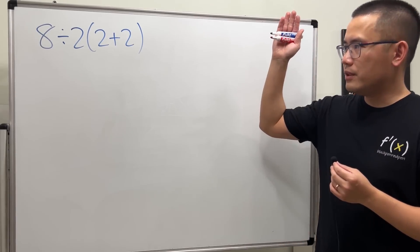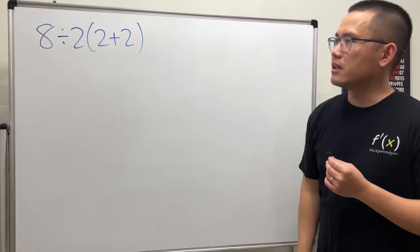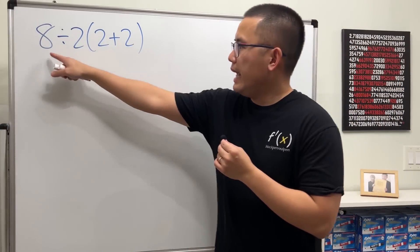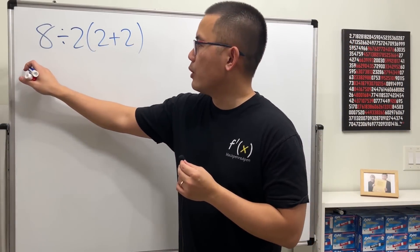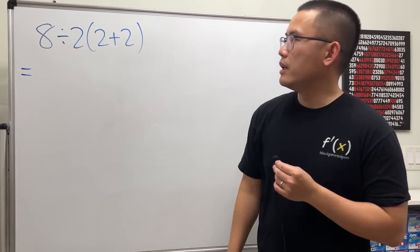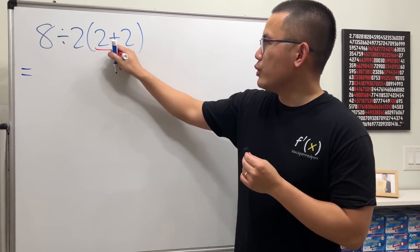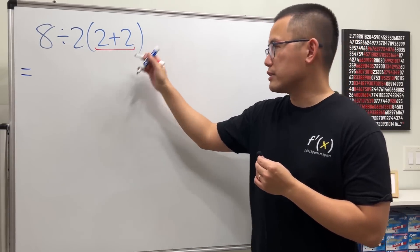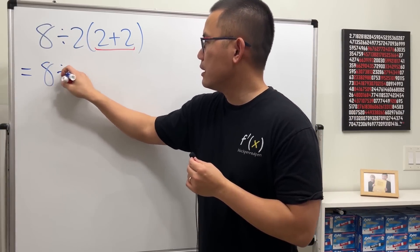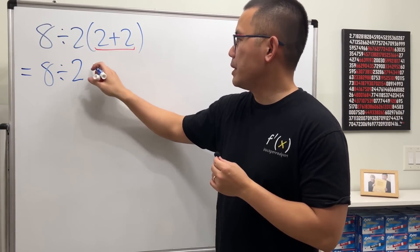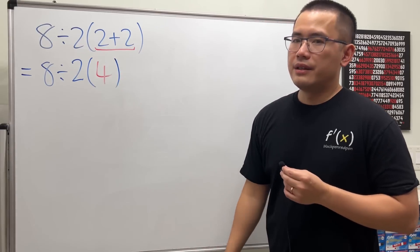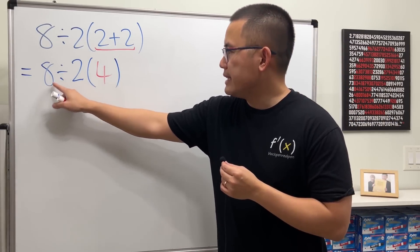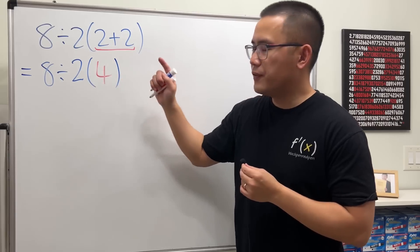So let me just make a video for my students and make this clear. 8 divided by 2 parentheses 2 plus 2—this is how people end up with 1. Almost everybody will tell you we do 2 plus 2 first, so that's okay. So we have 8 divided by 2, keep the parentheses, 2 plus 2 is 4. Now we have 8 divided by 2 parentheses 4.